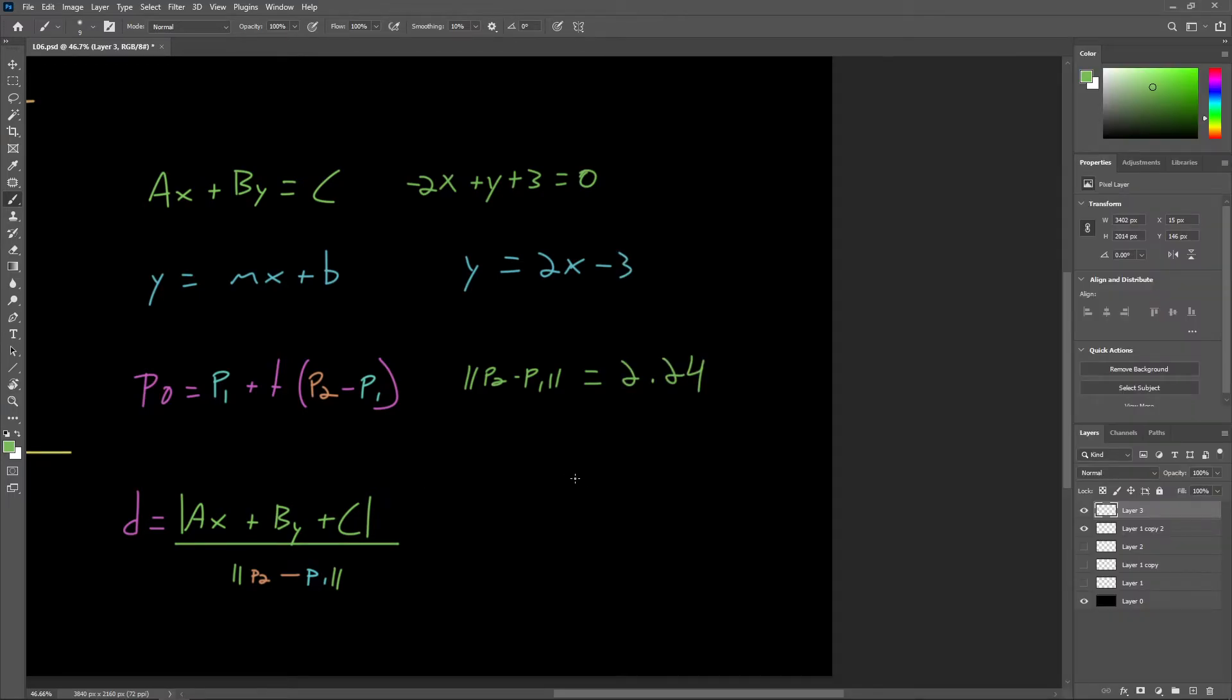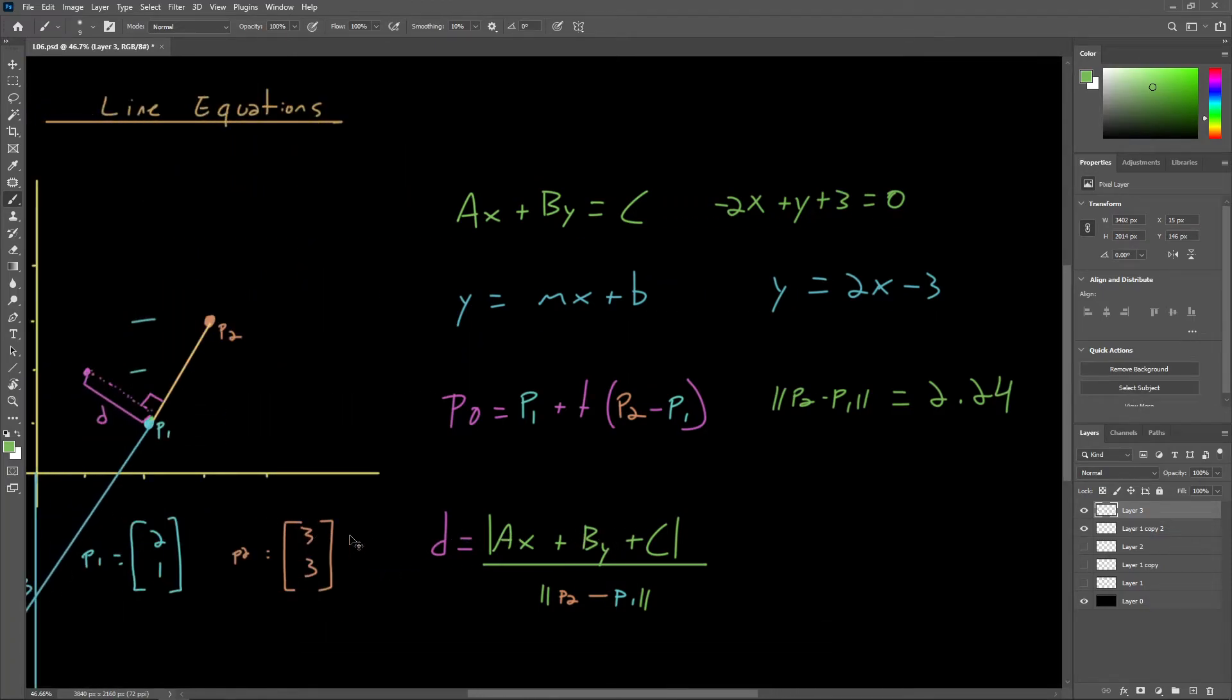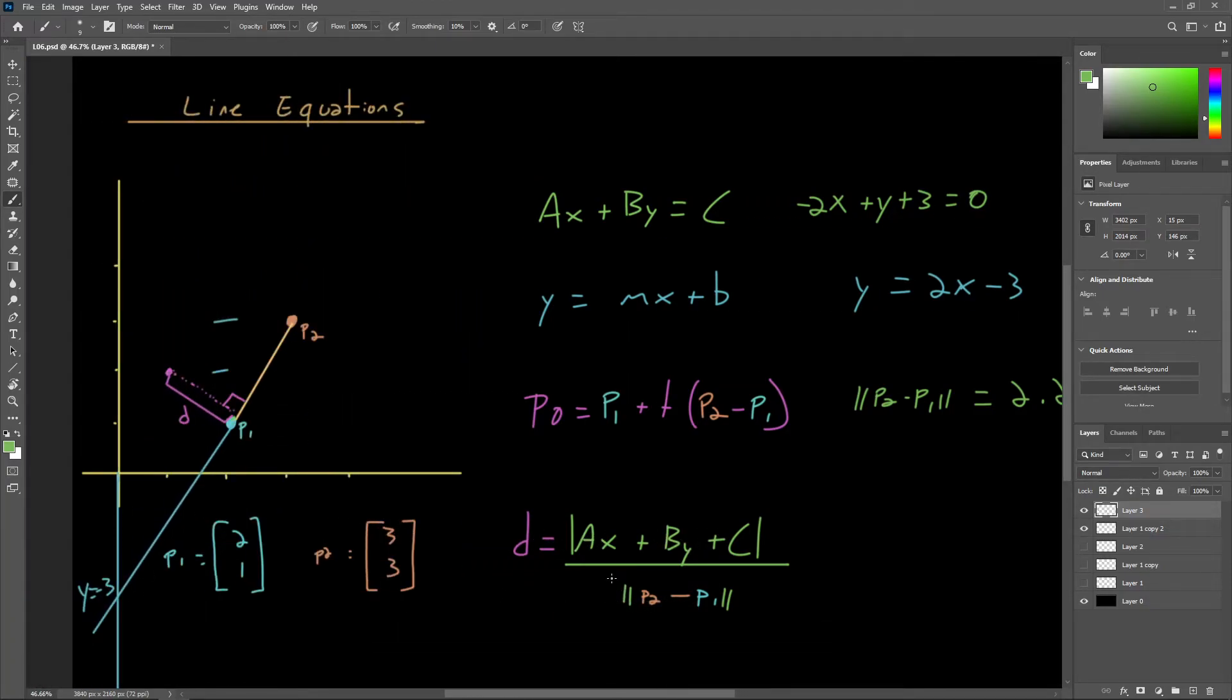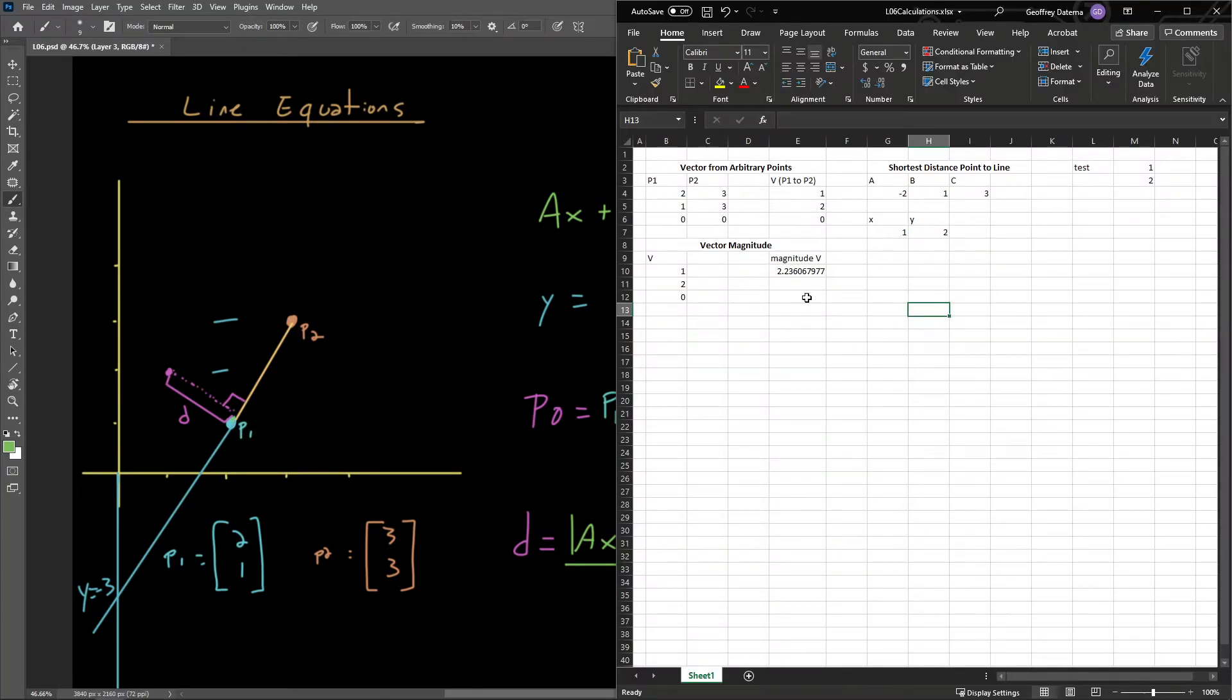Finally, the only other thing we need to know here is the magnitude of the vector from P1 to P2. We already have that calculated here, that's around 2.24. But let's just make another column here. So the magnitude, we'll just say that that is equal to what we have calculated in this cell right here. That way, if we want to change the line segment that we're working with, this value will automatically update.